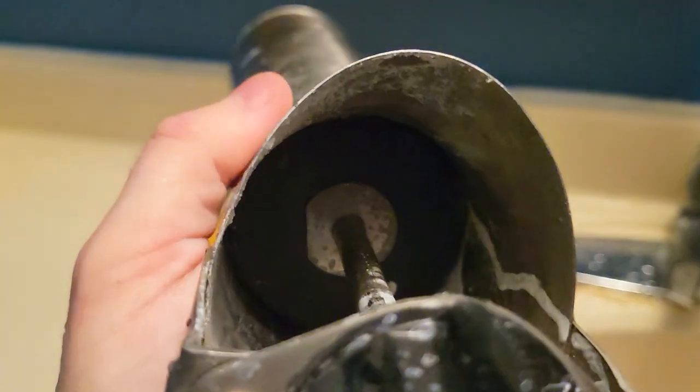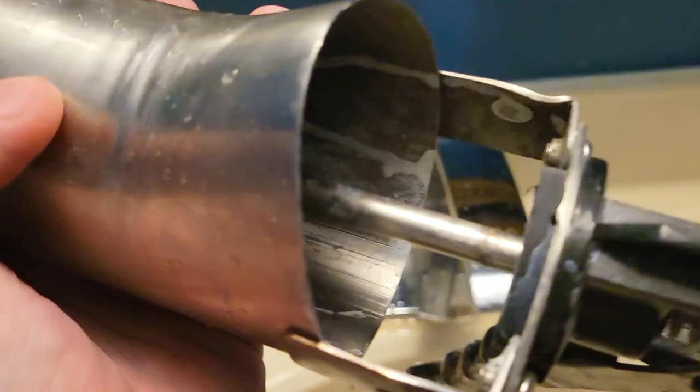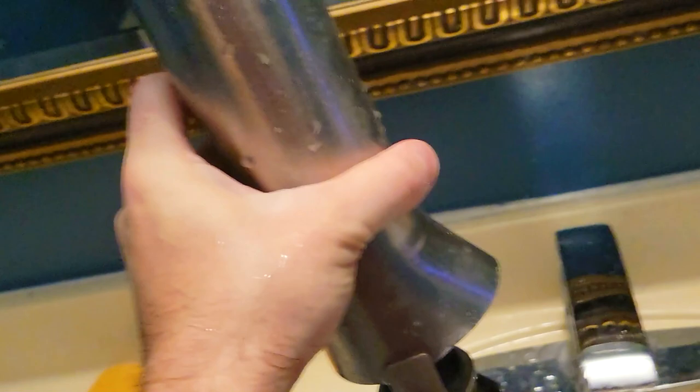Once the cement or grout is in there, it's just going to trickle through but it's not going to fall through because of the rubber plunger that's in there. You can disassemble this as well if you want to do a really good deep clean after you're done.